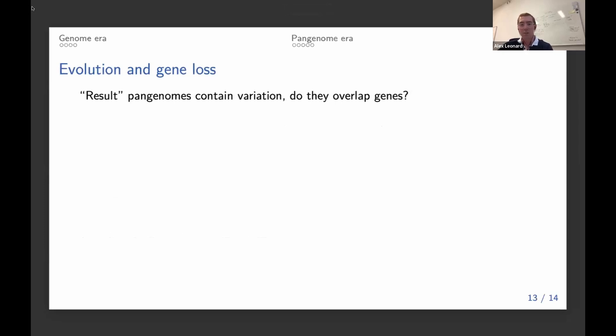And as another example, we were able to do this in bison because we were including them in one of our earlier graphs. But the pangenomes themselves contain variation. So we can just immediately ask, does any of this variation within the graph overlap genes?